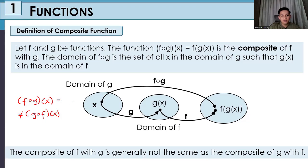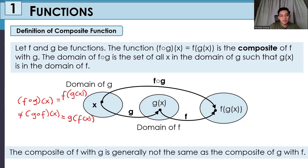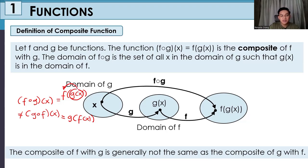For f of g of x, g is on the inside — we get g of x first, then substitute into f of x. For g of f of x, we get f of x first and then substitute into g of x. The order matters.